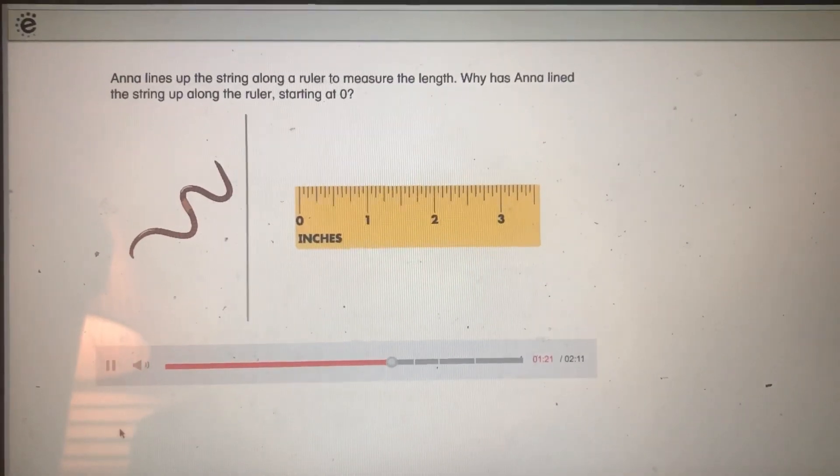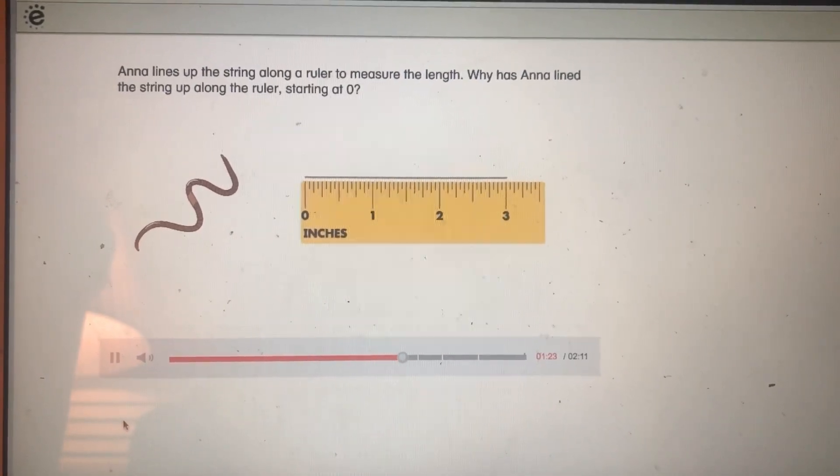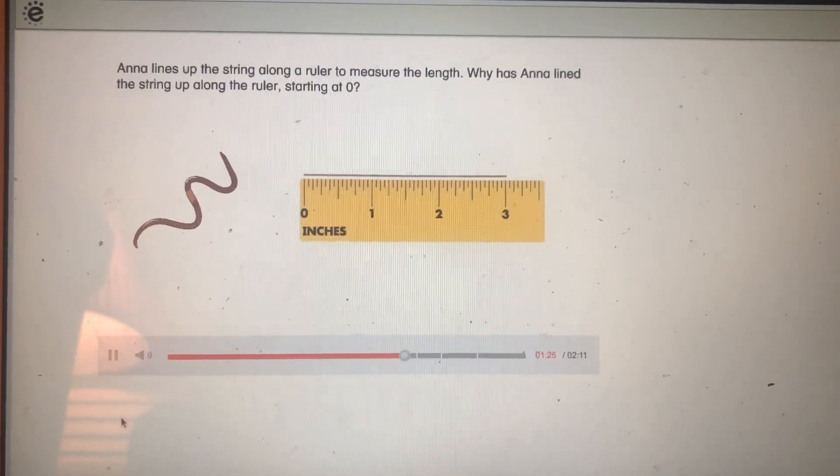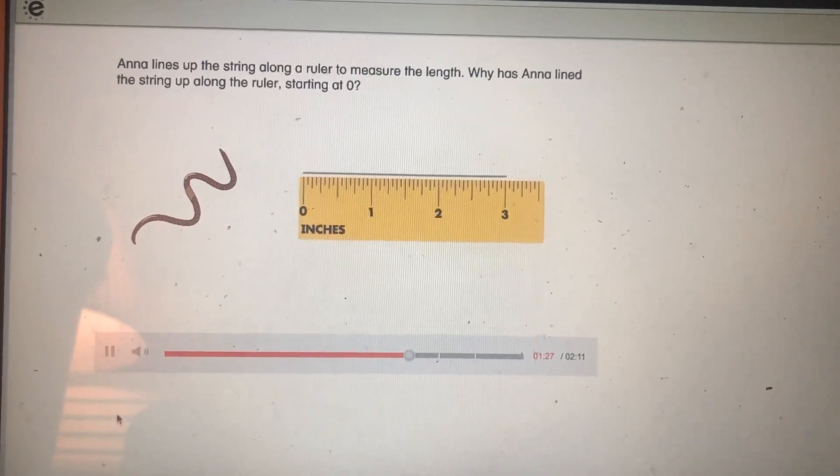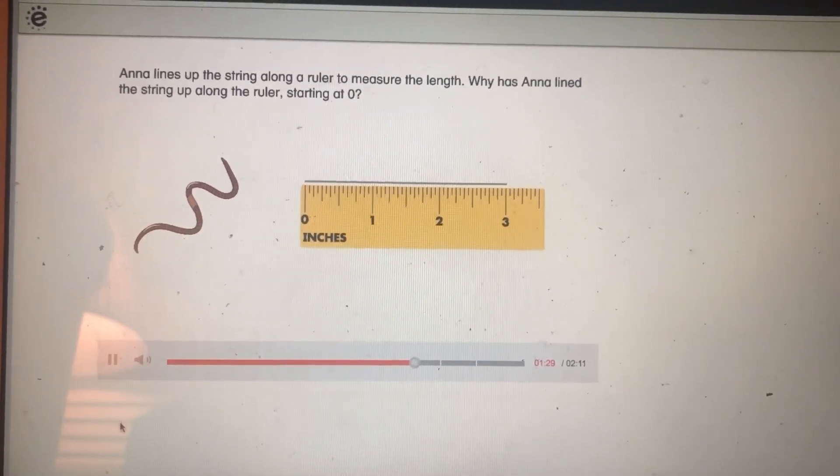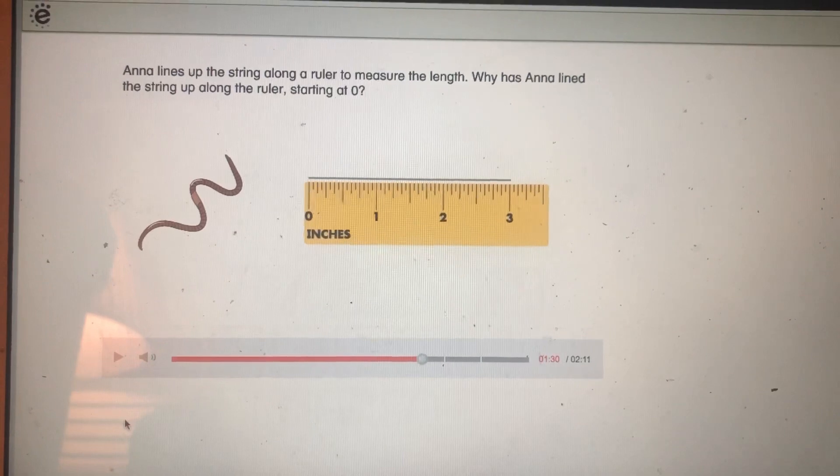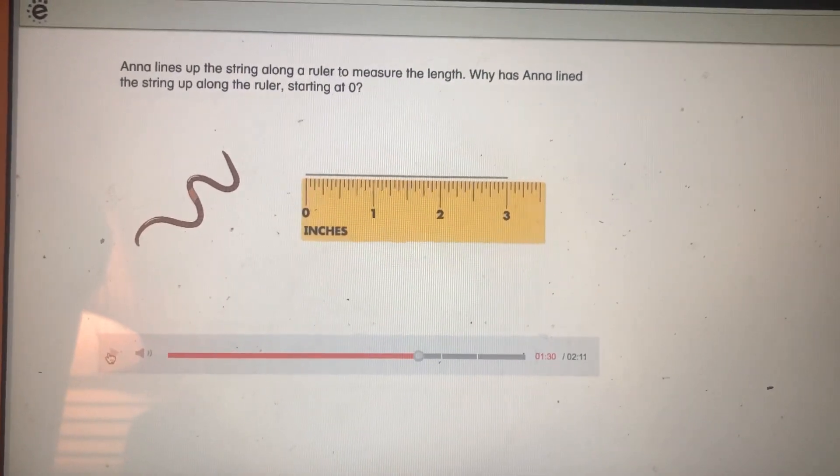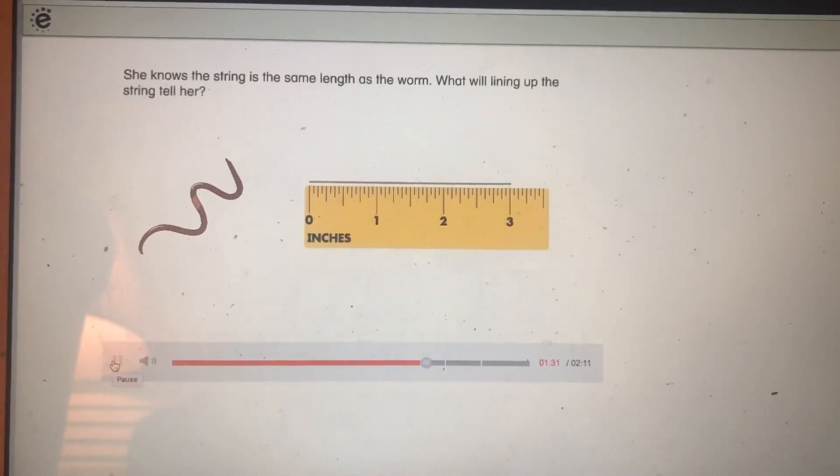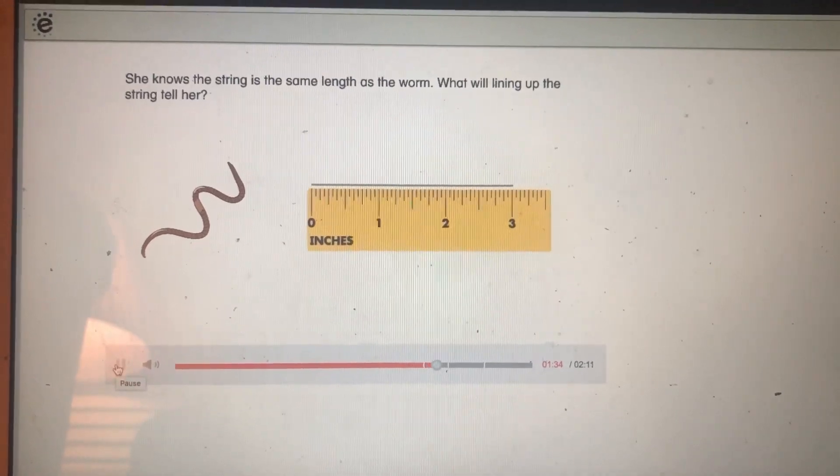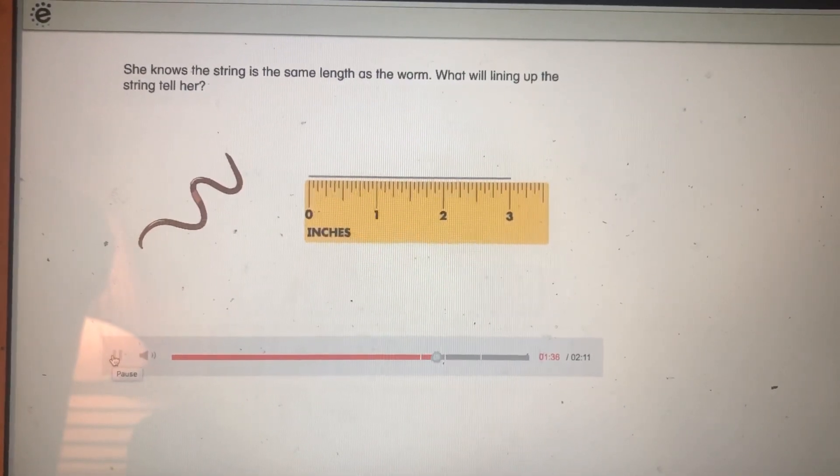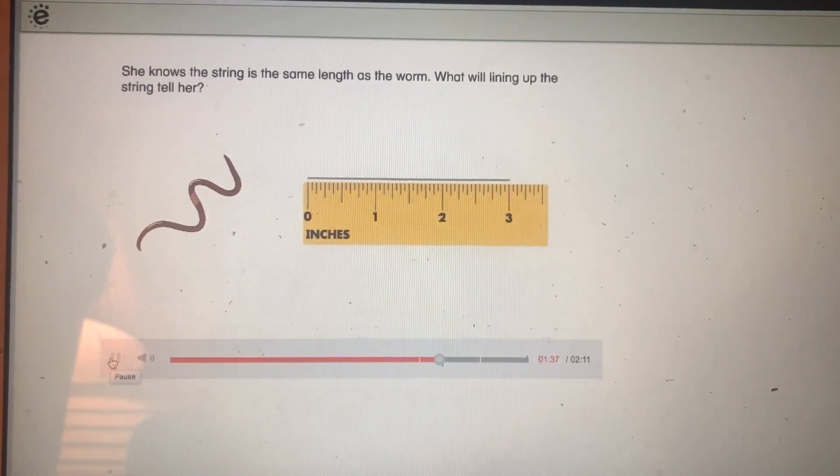Anna lines up the string along a ruler to measure the length. Why has Anna lined the string up along the ruler starting at zero? She knows the string is the same length as the worm. What will lining up the string tell her?